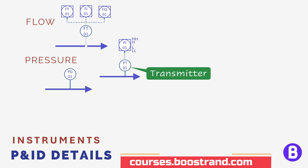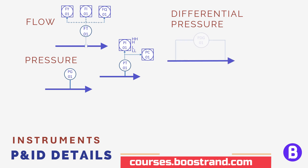We can also use a differential pressure gauge, which can be used to measure the difference between the pressures at two points. They are commonly used to measure the pressure drop across a certain component, whether it's equipment or instrument, or even a fitting such as the strainers of a pump.